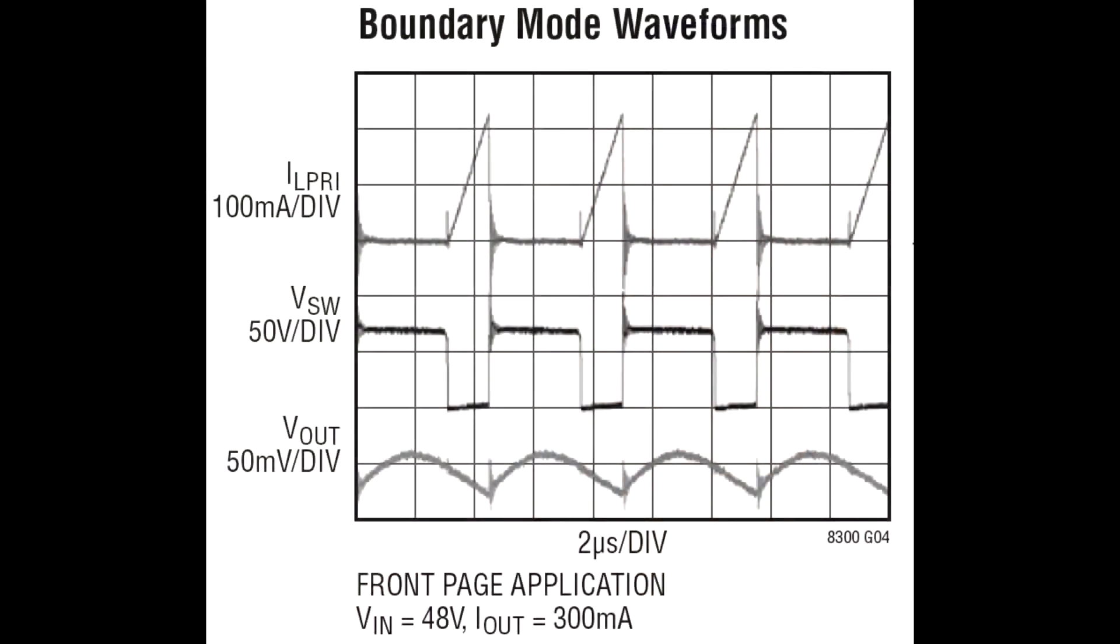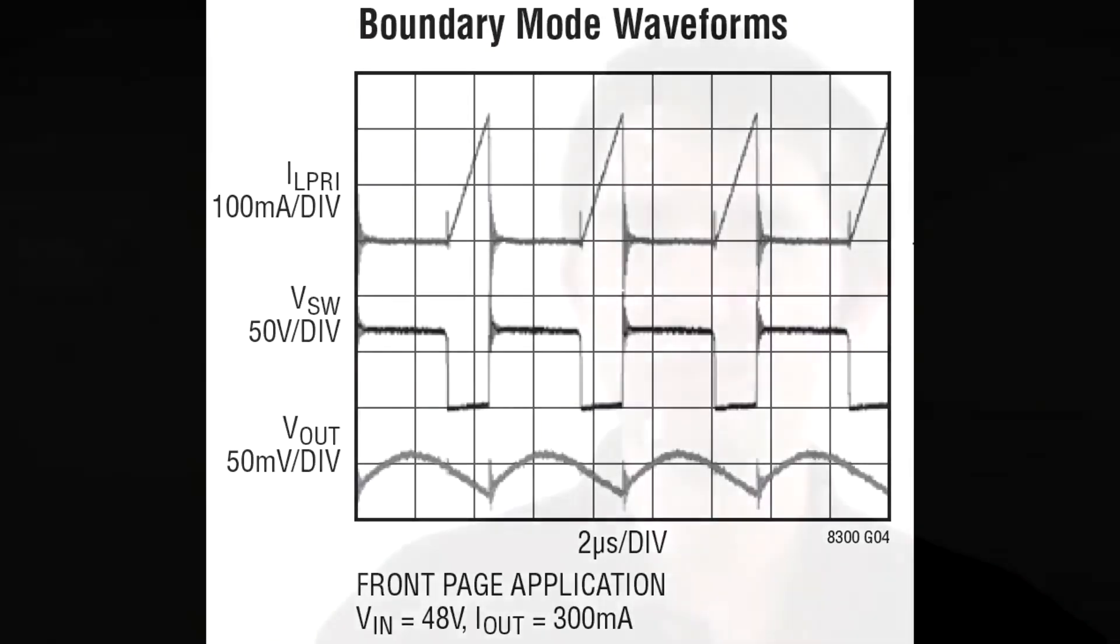And then finally it has a boundary mode and what that does is it basically changes the switching mode so that when you have a light load on the secondary side, it actually can sense that and it can change its algorithm in order to not oversaturate the transformer and to basically try and even out your efficiencies a little bit. So all in all this is a great little package. TSOT 23 5-pin package, it's tiny, very few pins. It's settable with a resistor, the voltage output is. There are more complicated parts but this one is very simple and very cool to be honest.